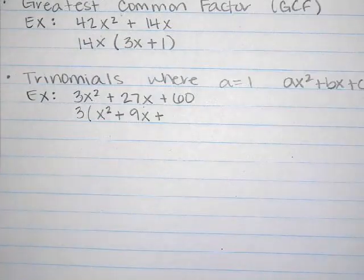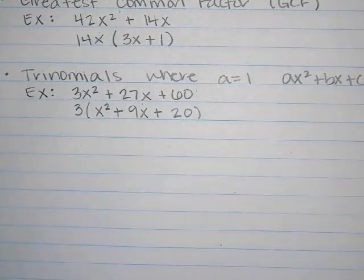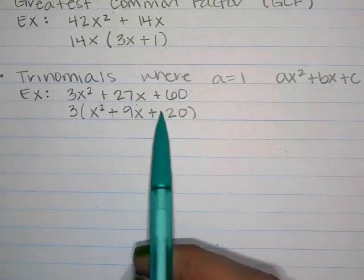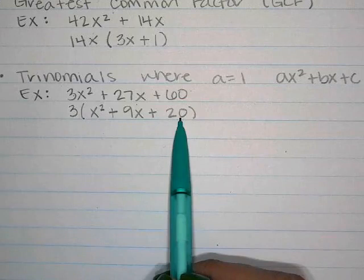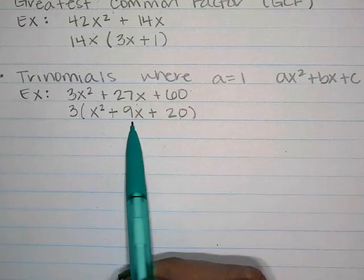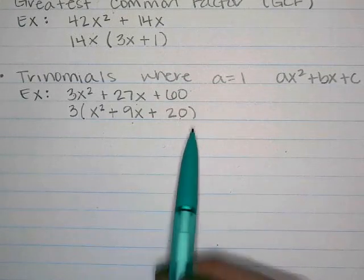60 divided by 3 is 20. After factoring out the GCF, we have x squared plus 9x plus 20 inside the parentheses. Now we do the typical trinomial trick: look for two numbers that multiply to 20 but add to 9.